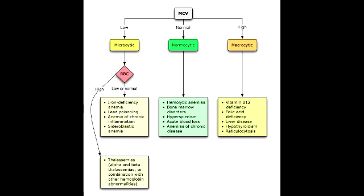Name the three causes of megaloblastic anemia. The three causes include folate deficiency, vitamin B12 deficiency, and orotic aciduria. Non-megaloblastic macrocytic anemia is a type of anemia that occurs due to increased red cell surface area, which happens in pathologies of the liver and spleen. The causes of non-megaloblastic macrocytic anemia include liver disease, alcoholism, and reticulocytosis.